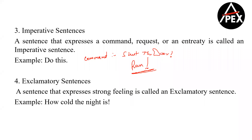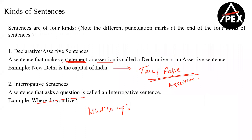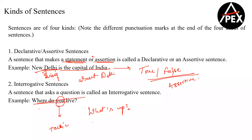Try to observe carefully. When I say 'New Delhi is the capital of India,' can I say New Delhi is the person or thing I'm talking about? Yes — and I'm telling all of this about Delhi. When I say 'where do you live?' — I'm talking about you and asking your location. Correct?